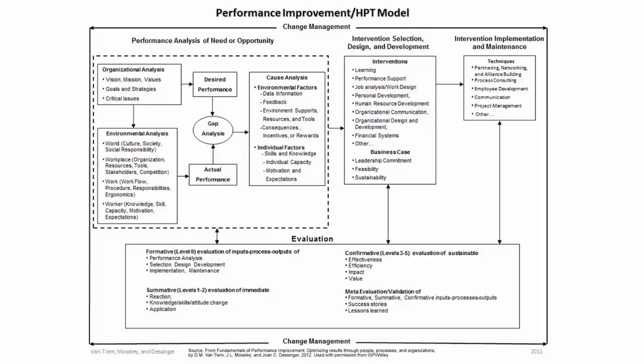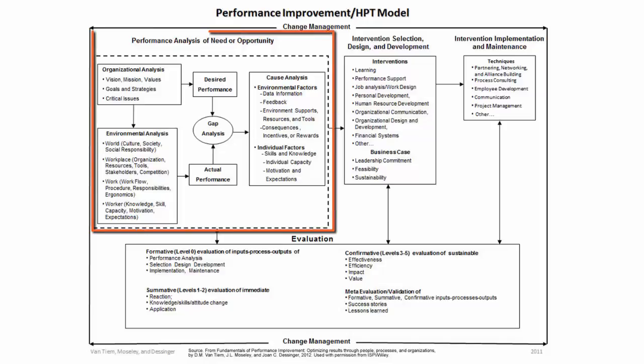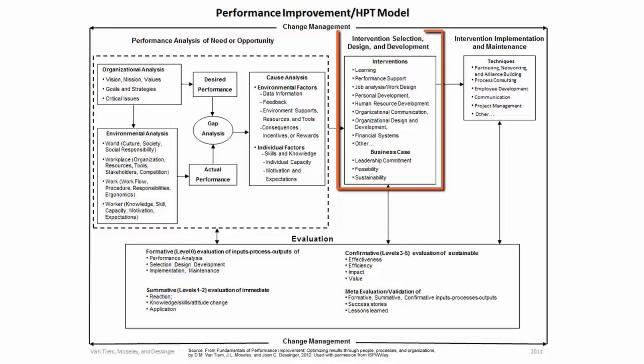Each blog I'll be discussing in a few minutes is going to fit into at least one of the categories you see here. It all starts with the performance analysis of a need or opportunity — we're trying to figure out what the performance gap is and what's causing it so we can solve the right problem. Once we know what our performance gap is, we can move into intervention selection, design, and development. This is where we get to choose how we're going to solve the problem and get to work creating it — for me, it's the most fun part.